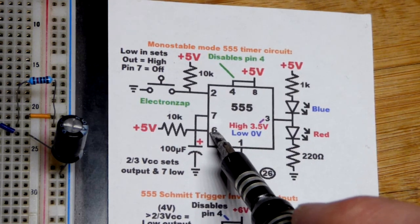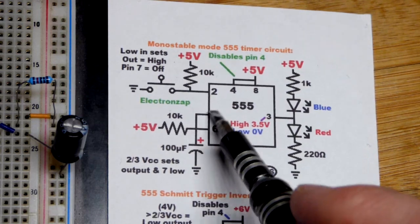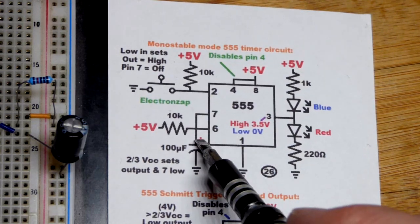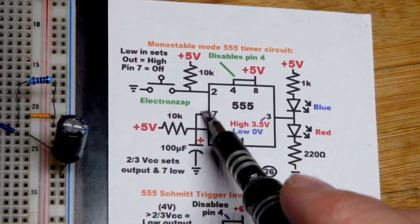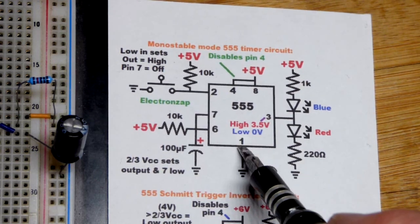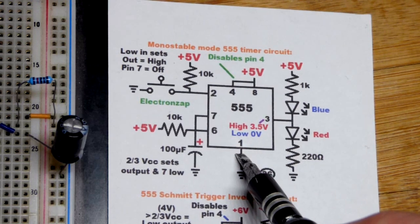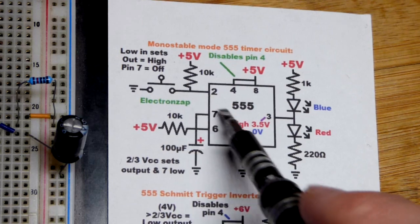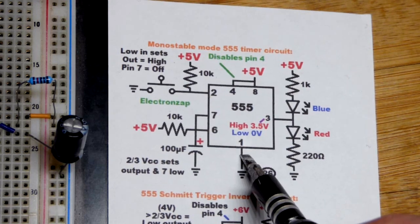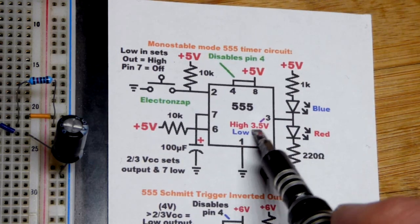But when it does, when pin 6 sees two thirds of the supply voltage, then pin 7 connects to ground and the capacitor discharges instantly. Also any current that goes through the 10k resistor will go directly to ground. And so when it reaches that point where two thirds of the supply voltage, it goes to ground, so does the output.